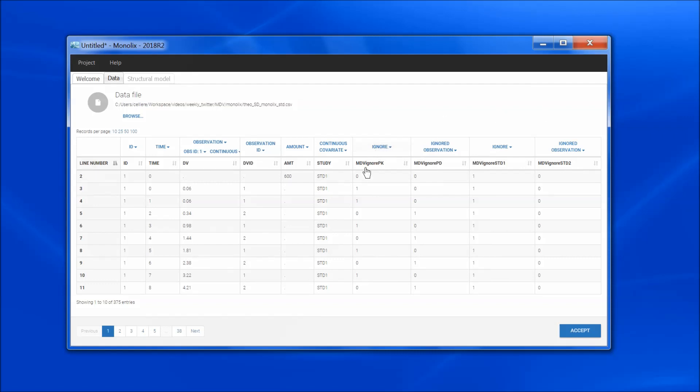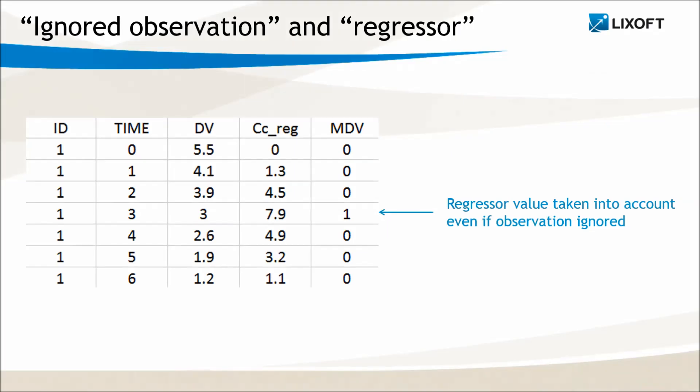As you may have noticed, it is not necessary to have a value of one on dose lines. In this example, dose and observation lines are recognized thanks to the dots.